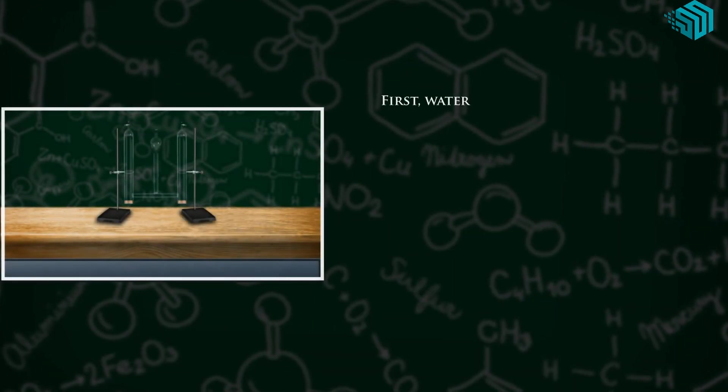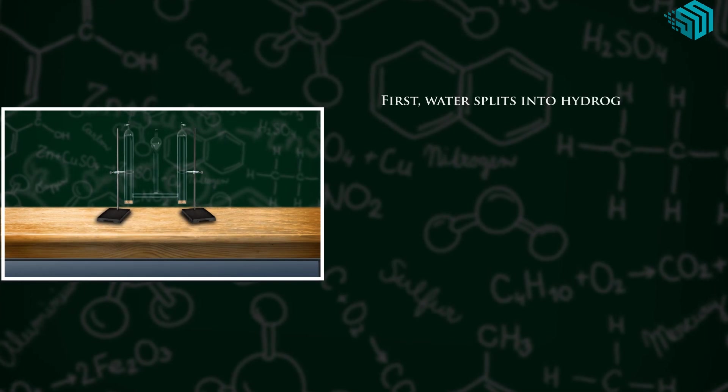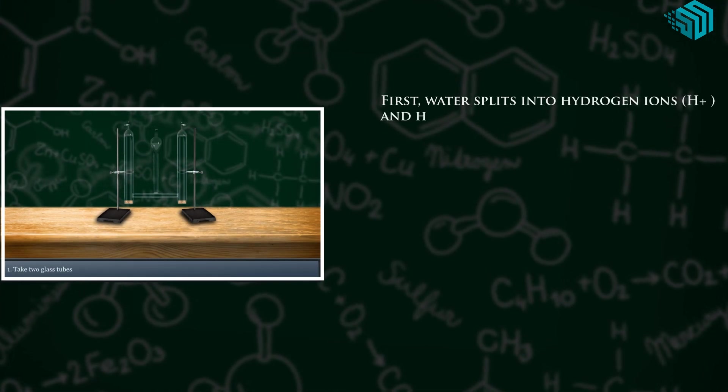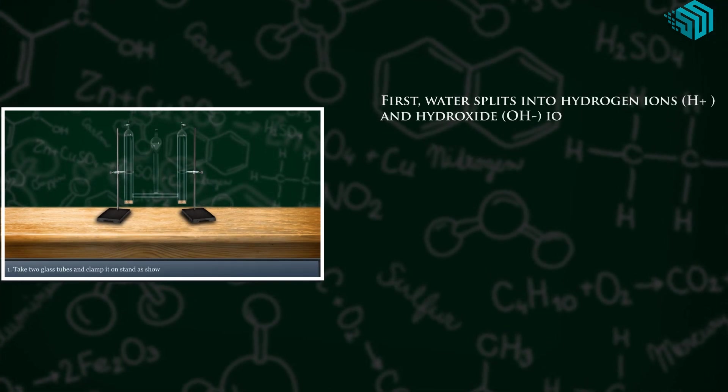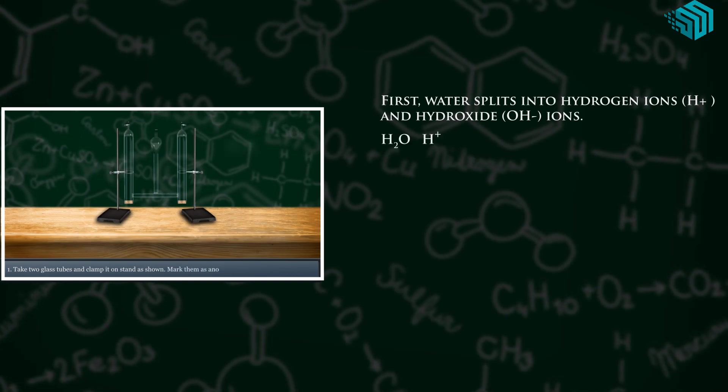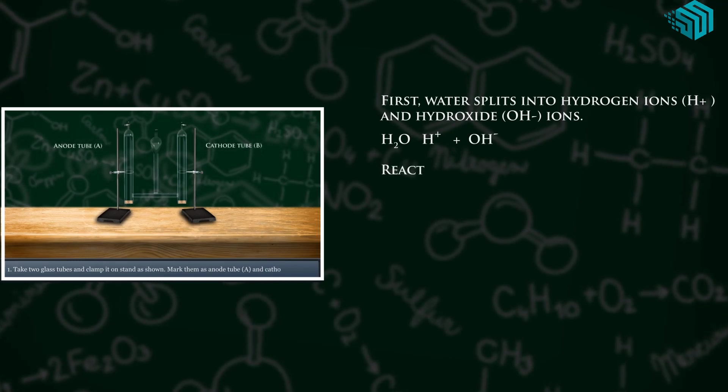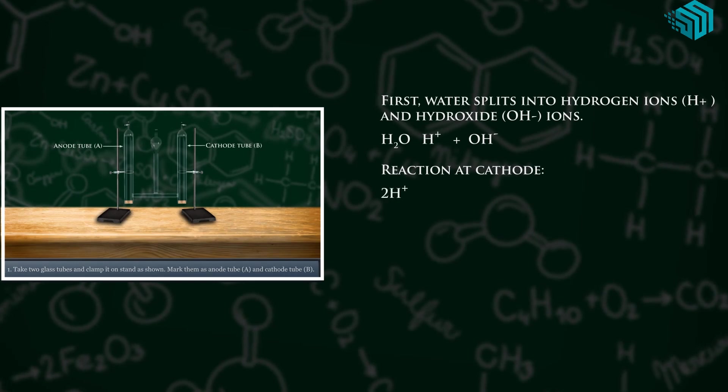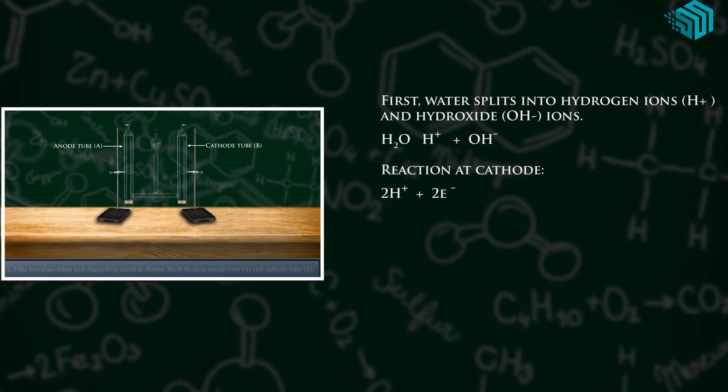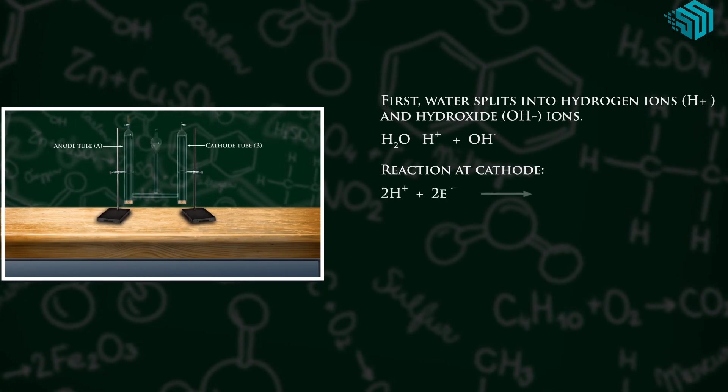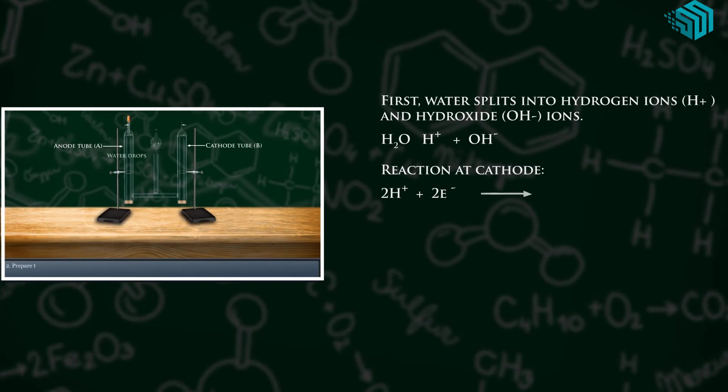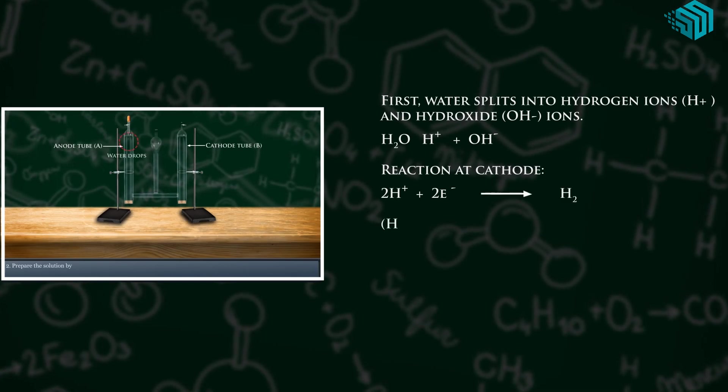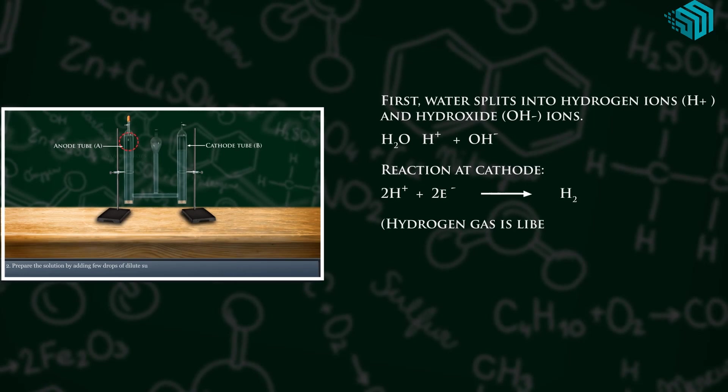First, water splits into hydrogen ions H plus and hydroxide OH negative ions. Reaction at cathode: 2H plus plus 2 electrons gives us hydrogen. Hydrogen gas is liberated at cathode.